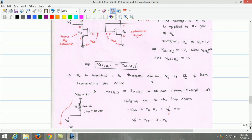Therefore, the process transconductance parameter μnCox, threshold voltage, and W/L of both transistors are same. This implies that the drain current of Q2 is identical to the drain current of Q1 transistor, that is 80 microamperes from example 4.3.